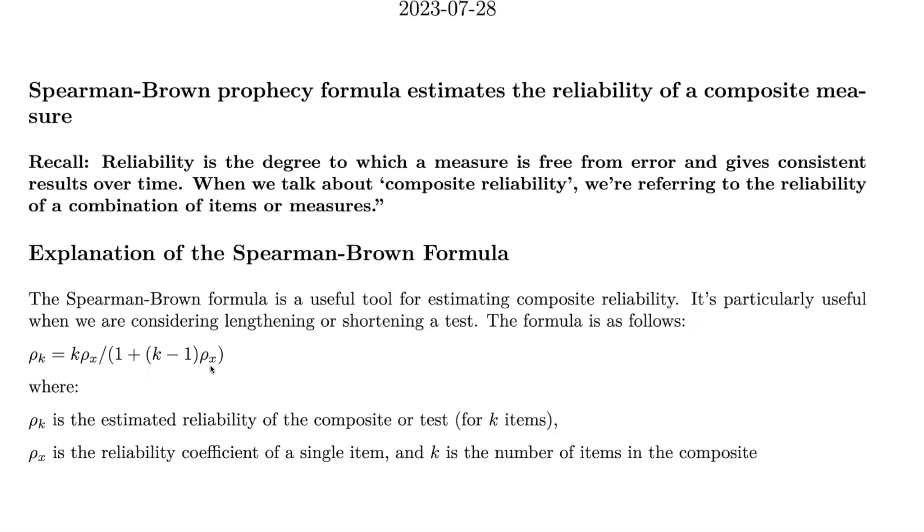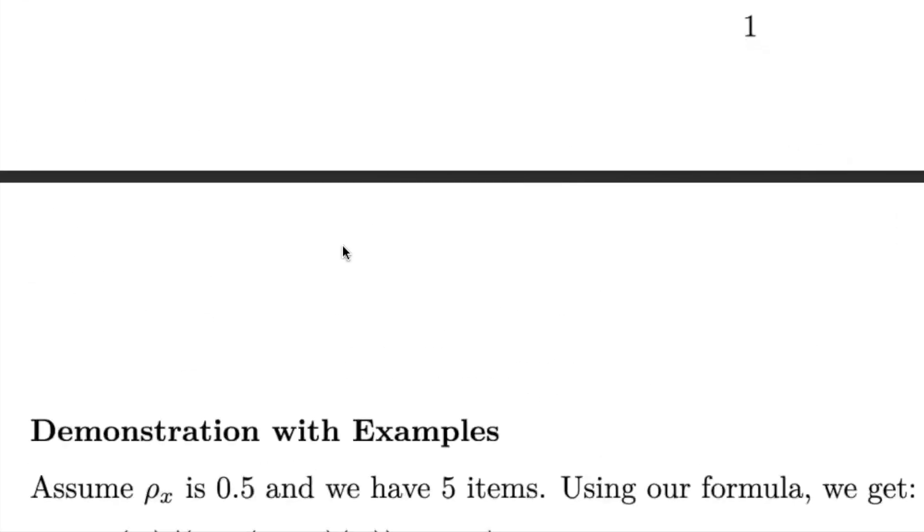Let's walk through an example to make this more concrete. Assume ρₓ is 0.5, which means that each item in our composite is only 50% reliable. Not perfect, but not entirely random either. And let's say we have five such items.